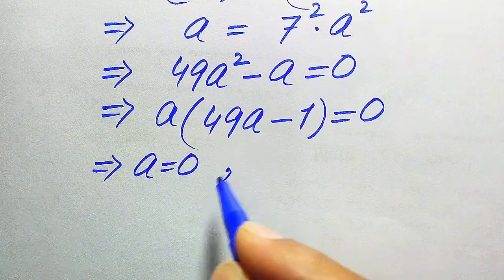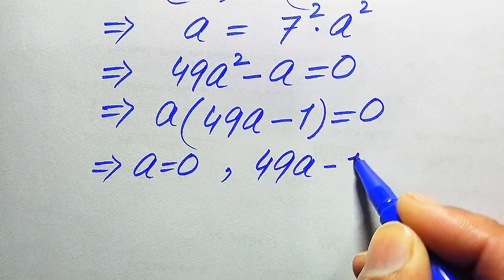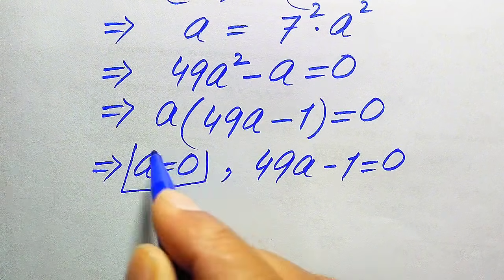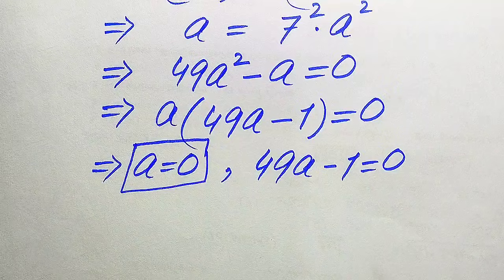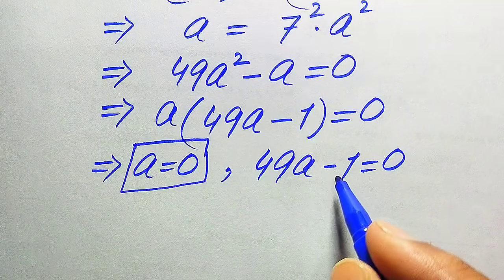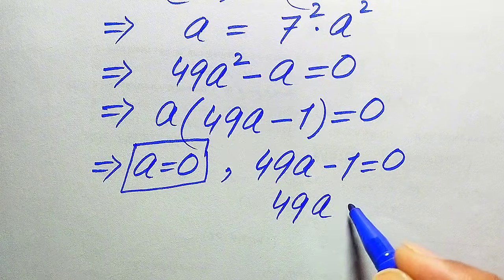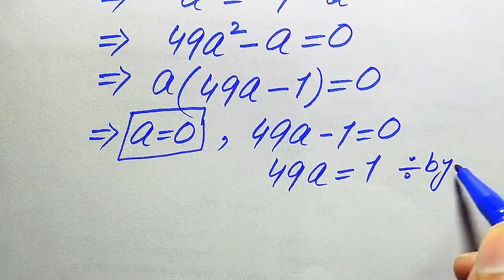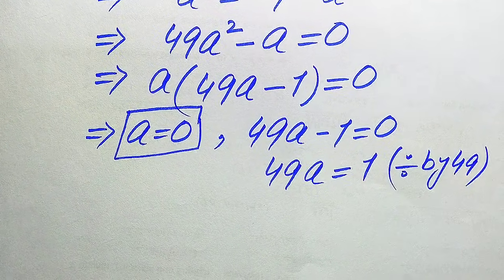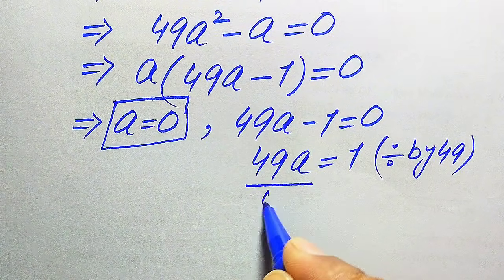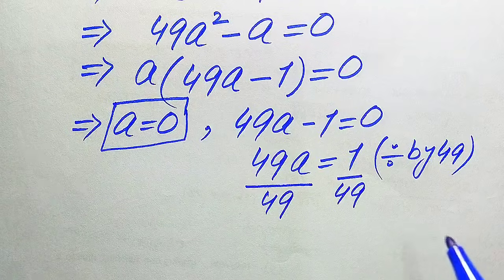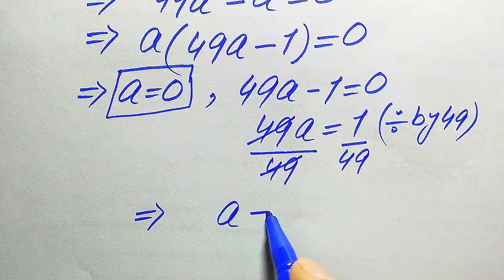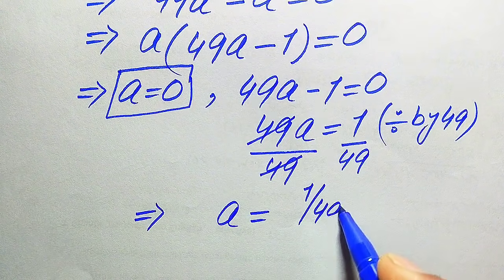We divide this into two cases: the first case gives a equals 0, and the second case is 49a minus 1 equals 0. From the second case we move minus 1 to the right-hand side: 49a equals 1. We divide both sides by 49, the 49s cancel, and we get a equals 1 over 49. So we have two roots: a = 0 and a = 1/49.